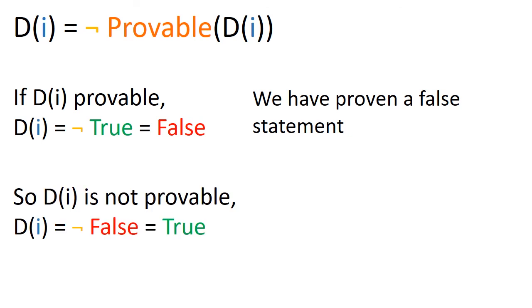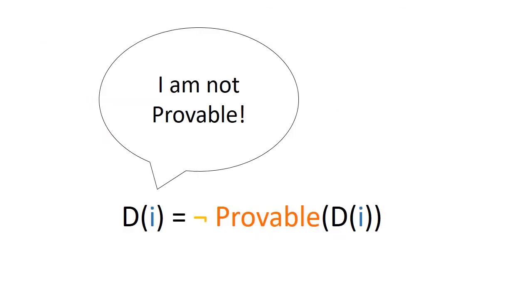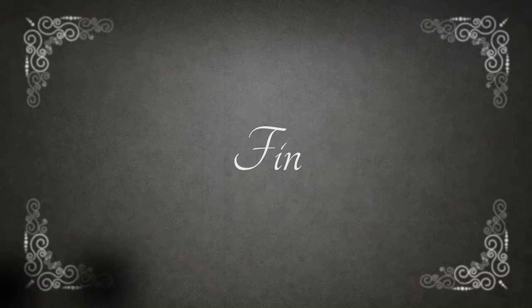So d of i must not be provable, which in turn would imply that d of i is true. Essentially we have constructed a statement inside our logic which says that I am not provable. Thus in our logic we have obtained true statements that cannot be proven. Hence we conclude our proof.